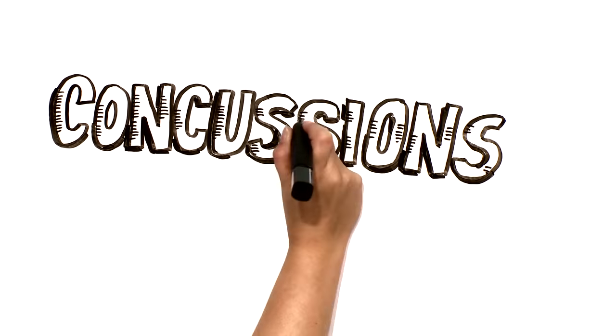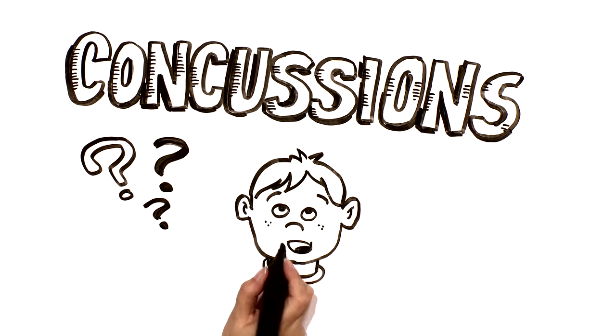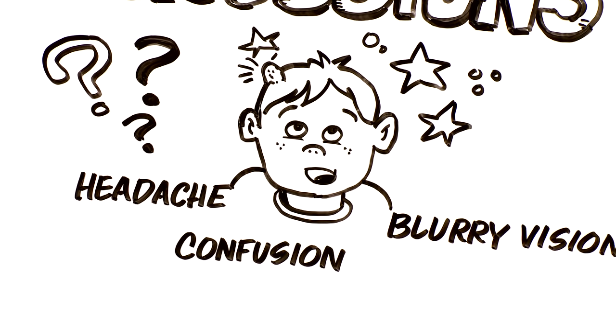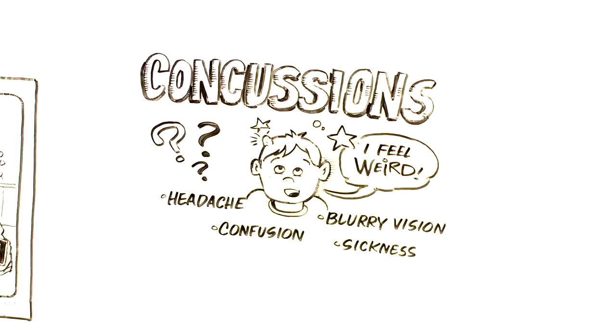Concussions 101. Let's start with the basics. What is a concussion? A concussion is a knock on the head where you usually have some other stuff going on: headache, confusion, blurry vision, feeling sick to your stomach, or even just generally feeling weird.